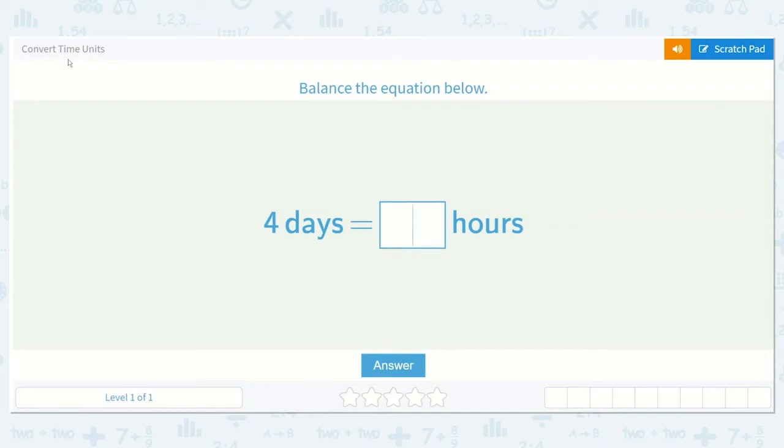Let's work on the lesson Convert Time Units. It says balance the equation below. I know in an equation both sides need to be equal. So here it says four days is equal to how many hours?